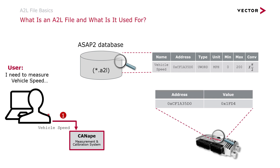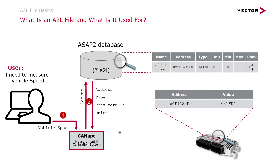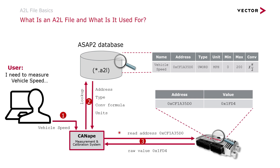In this example, we'll use Canopy to measure the software variable vehicle speed from inside our ECU. Canopy uses the A2L file to find the address, size, and how it should be displayed. Canopy then creates the request in the XCP protocol, waits for the raw data, and displays the data in engineering units.